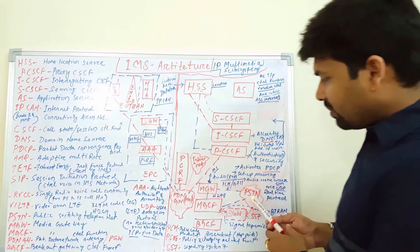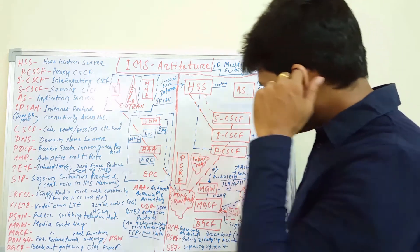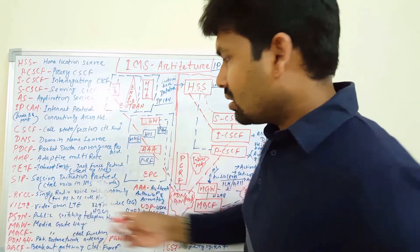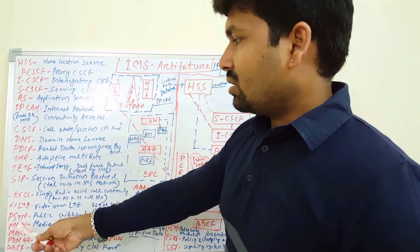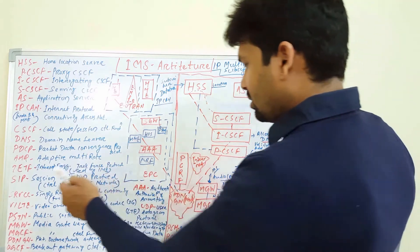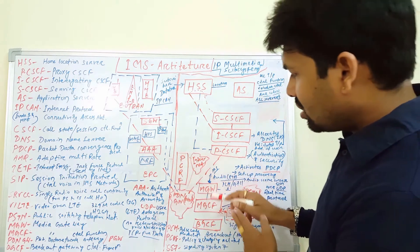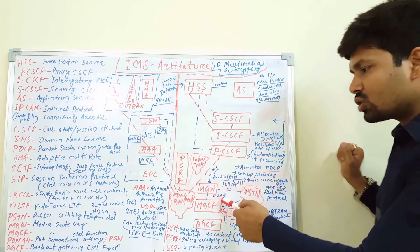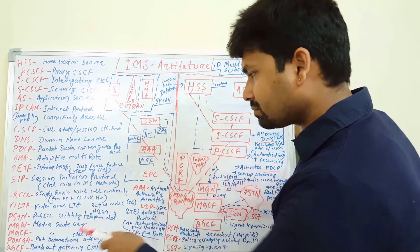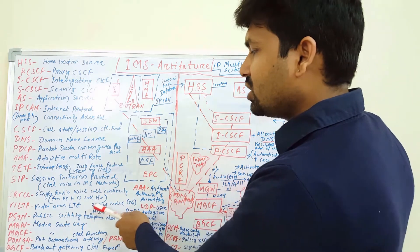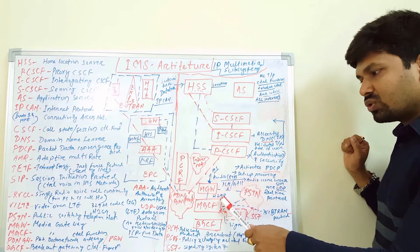PSTN — public switch telephone network — is used when we initiate a call from the IP network to a landline or another network. To connect to the PSTN we need to go through the MGW, MGCF, and BGCF. The MGW is the media gateway, and MGCF is the media gateway control function. For voice coding between MGW and MGCF we use H.248 or H.264 codecs for VoIP in LTE. For 3G we use the 324M codec.